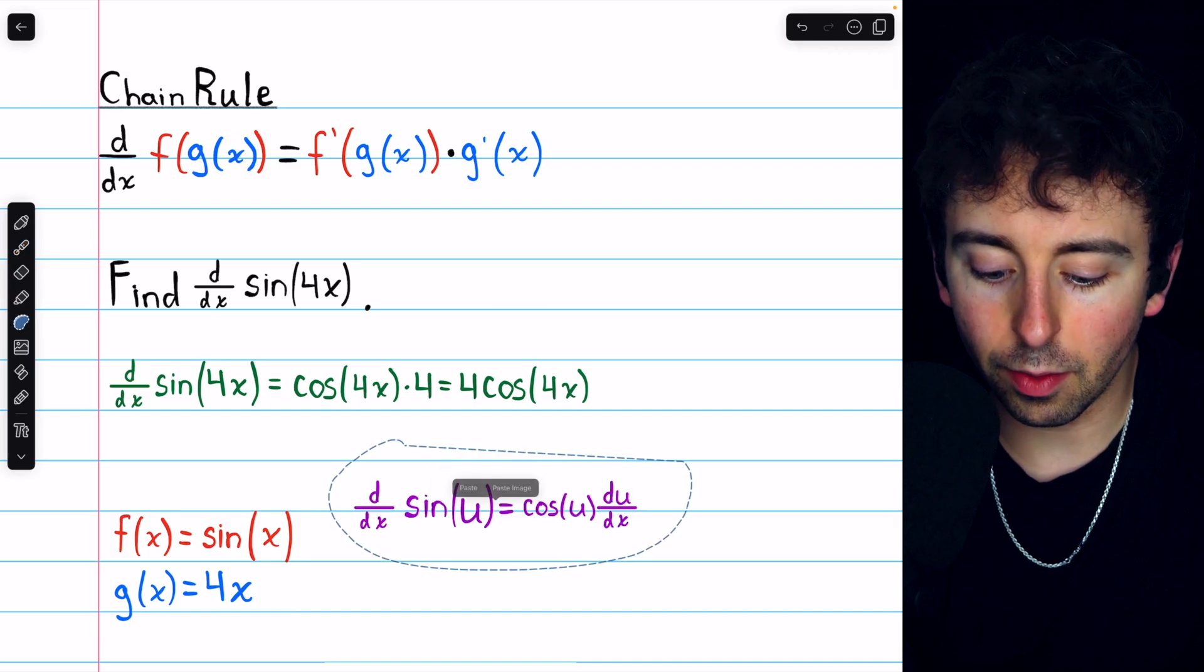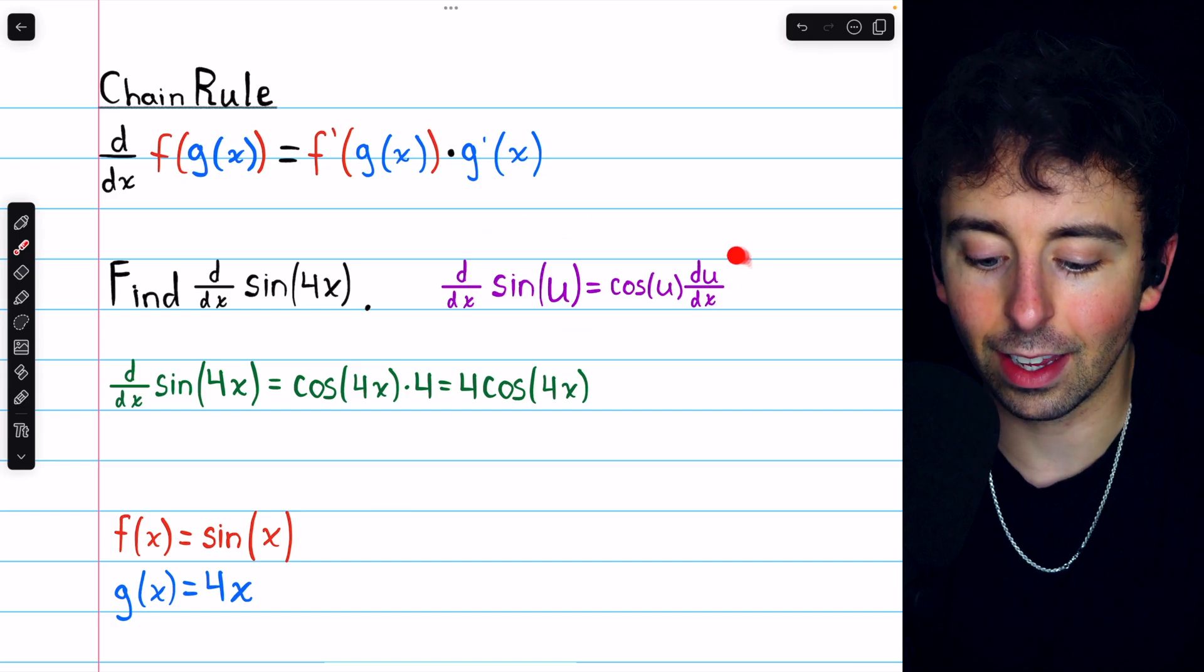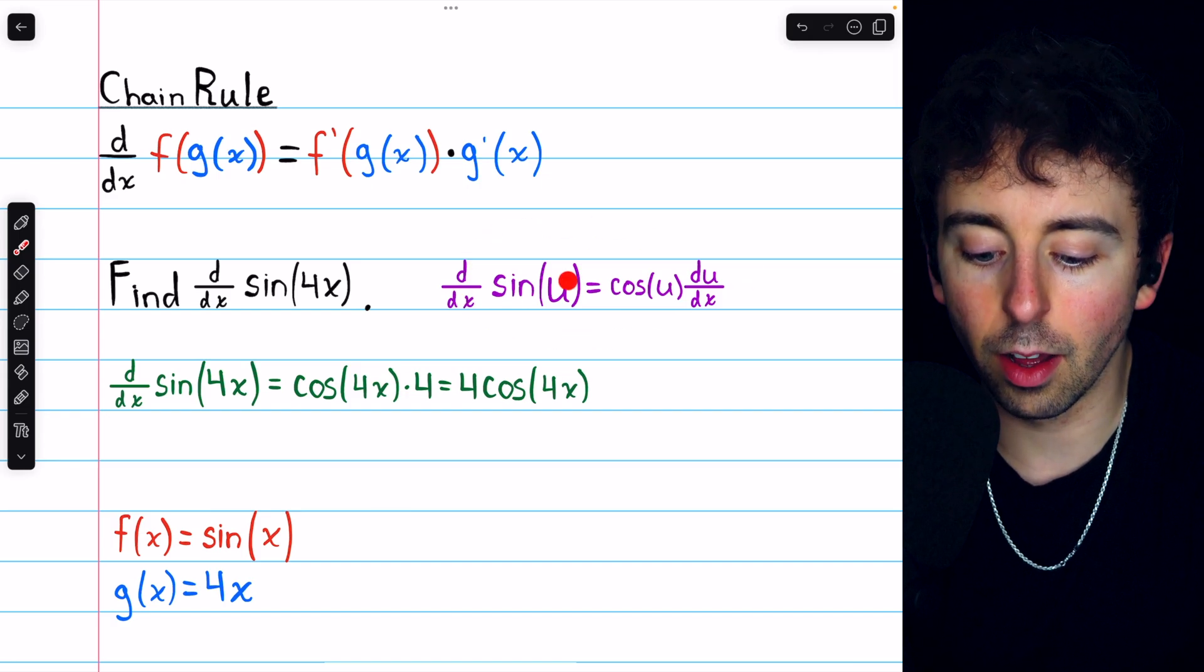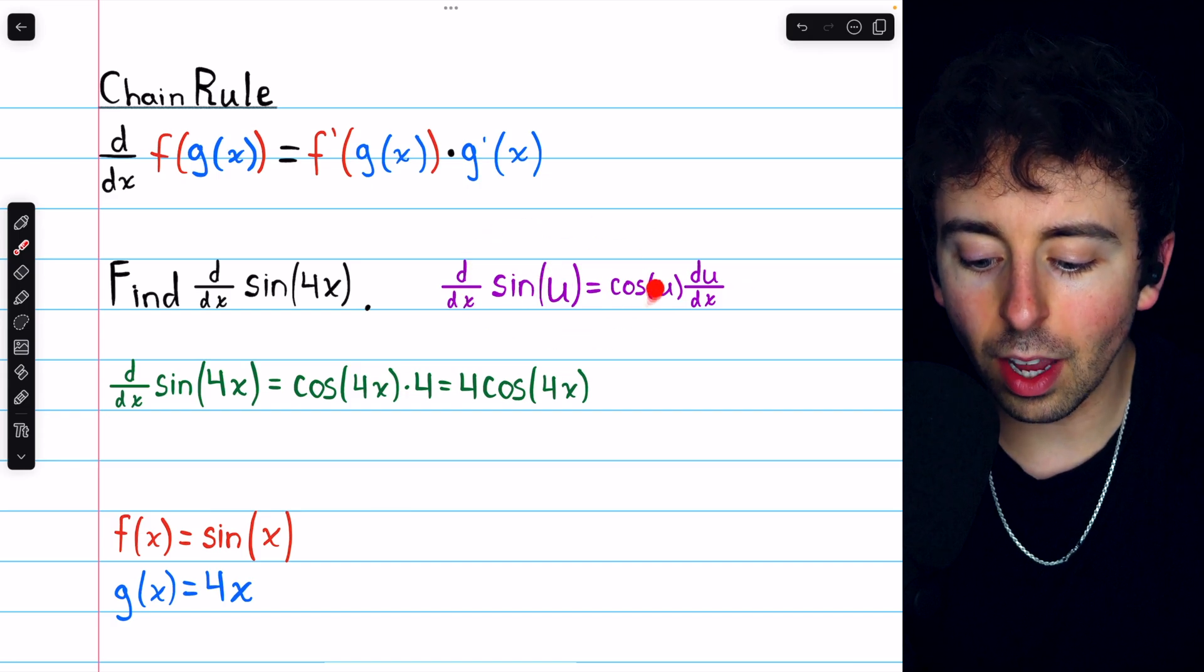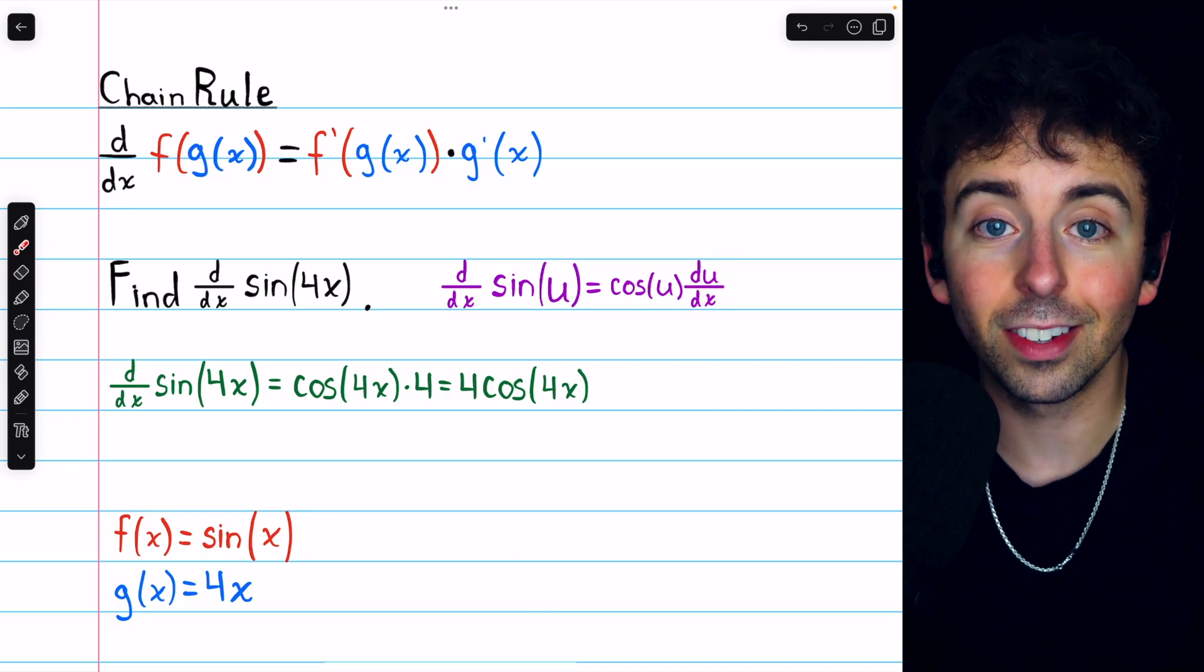Taking the derivative of composite functions with sine is straightforward. In general, it looks like this. The derivative of sine of a function u is cosine of u times the derivative of u with respect to x, just like we saw here.